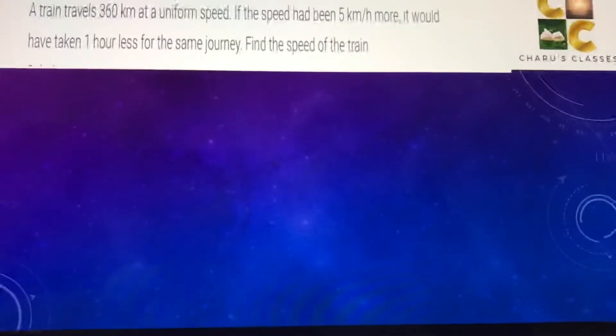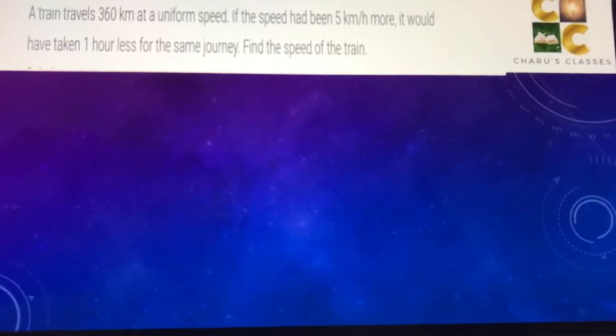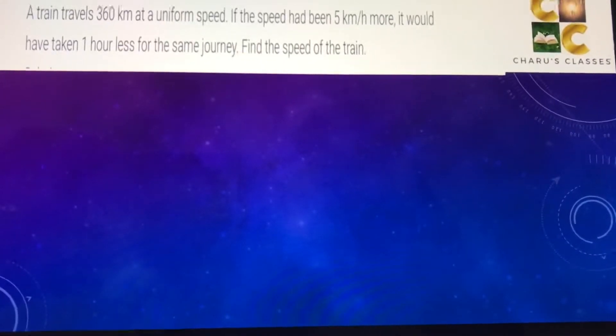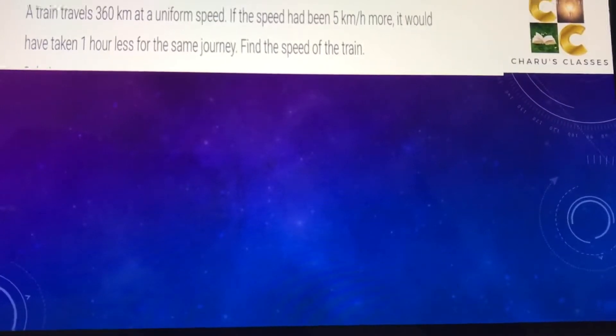Question number 8. A train travels 360 km at a uniform speed. If the speed had been 5 km per hour more, it would have taken 1 hour less for the same journey. Find the speed of the train.